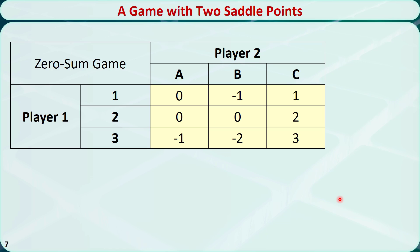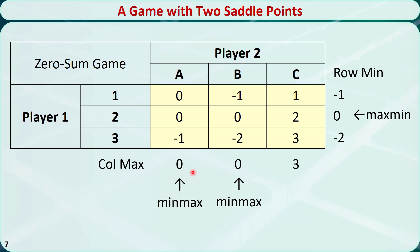Some games may have more than one saddle point. For this example, this is a zero-sum game. The minimum values of the rows are negative 1, 0, and negative 2 respectively. The max-min is 0. The maximum values of the columns are 0, 0, and 3 respectively. The min-max values are 0 and 0. So the max of row minimums equals the min of column maximums equals 0. We have two saddle points, and the value of the game to player 1 is 0.